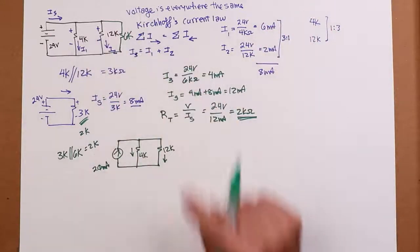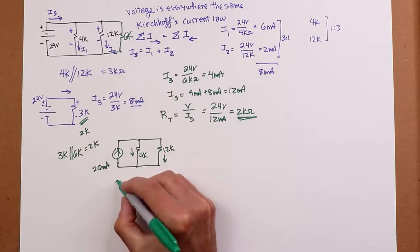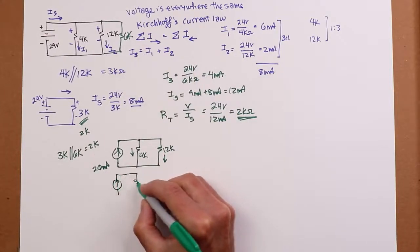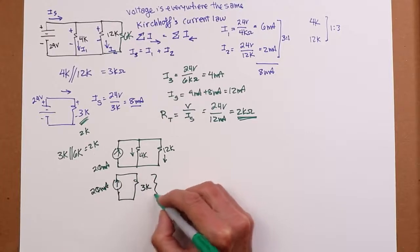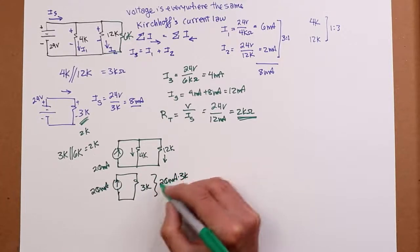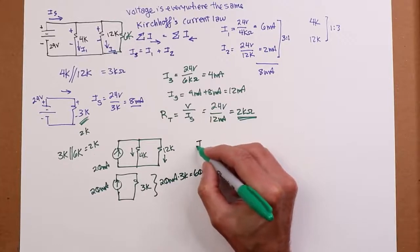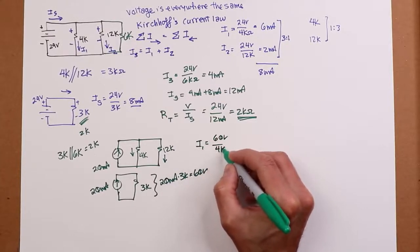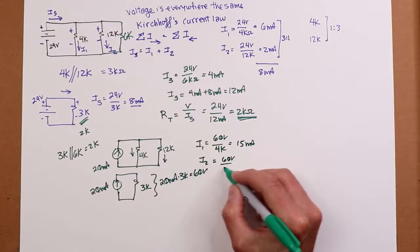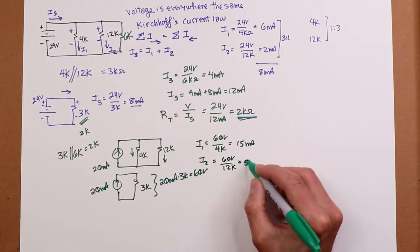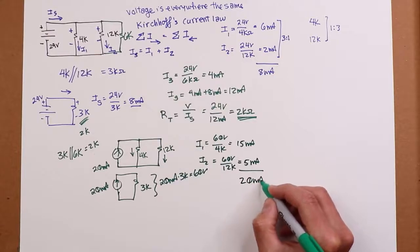So we've already determined some of these values. We already know that 4k in parallel with 12k is 3k. So this thing basically falls out, which would tell you through Ohm's law, this voltage would have to be 60 volts. And now you know the two individual currents, so you can find them very quickly. The first one would have to be 60 volts over 4k, which would get you 15 mils. And I2 would have to be 60 volts divided by 12k, which would get you 5 mils. And of course that has to add up, according to KCL, 20 mils, which is the source current.